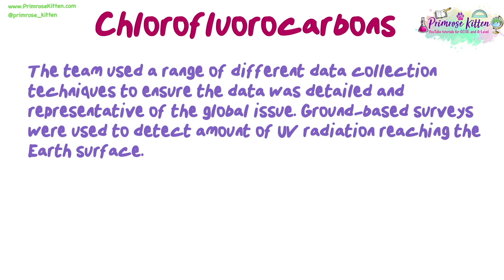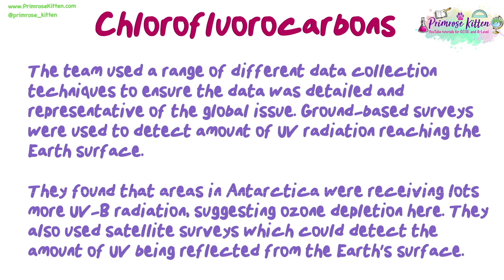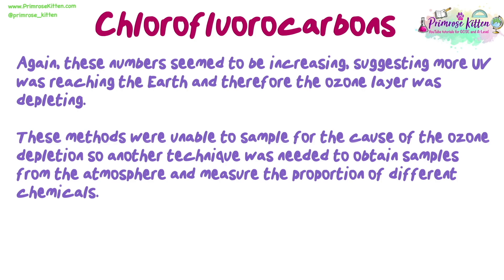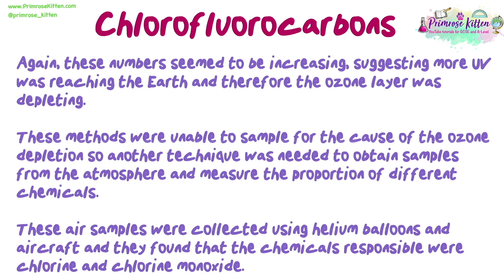The team used a range of different data collection techniques to ensure the data was detailed and representative of the global issue. Ground-based surveys were used to detect the amount of UV radiation reaching the Earth's surface — they found that areas in Antarctica were receiving much more UVB radiation, suggesting ozone depletion there. Satellite surveys detected the amount of UV being reflected from the Earth's surface; again, these numbers were increasing, suggesting more UV was reaching Earth. Air samples were collected using helium balloons and aircraft, and they found that the chemicals responsible were chlorine and chlorine monoxide.